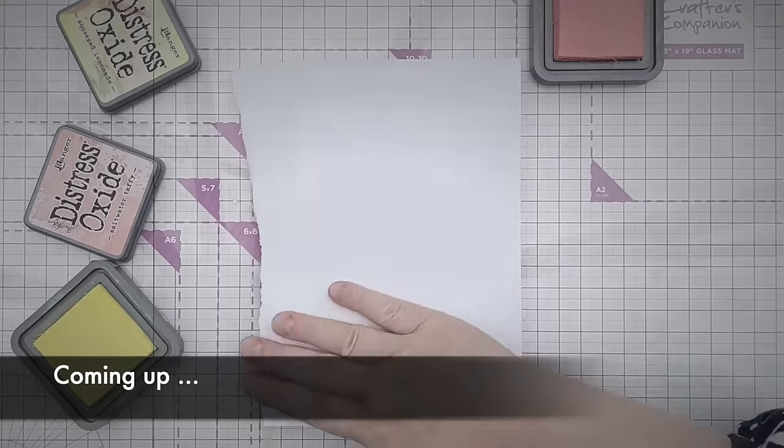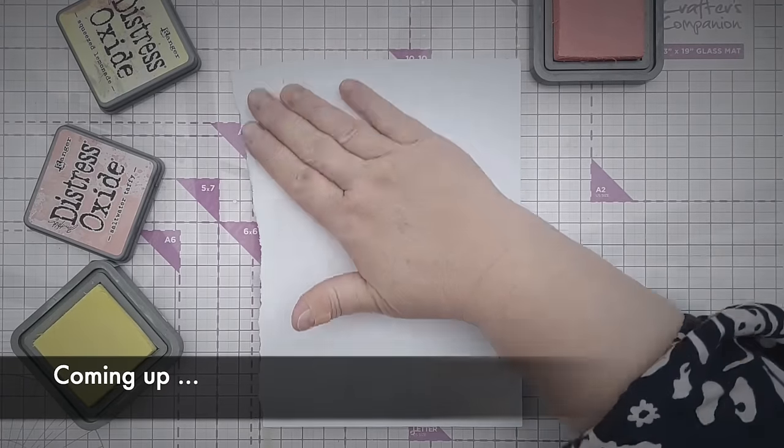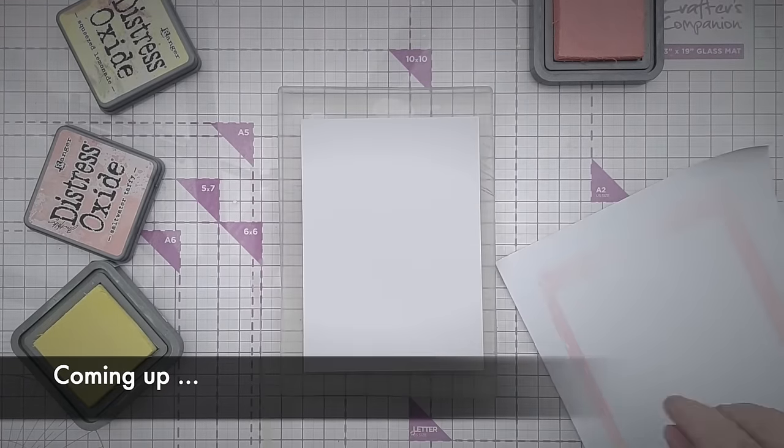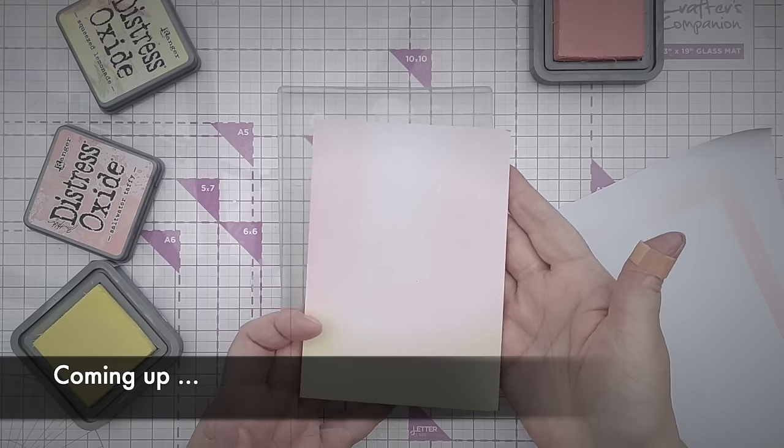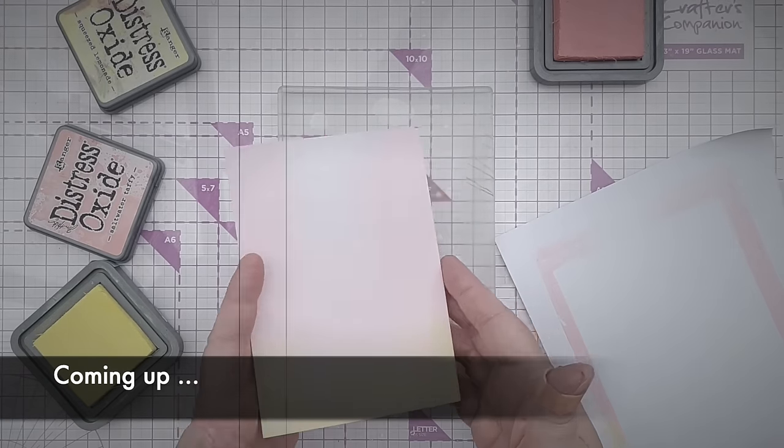Distress oxides are an alternative to acrylics when it comes to gel printing, and one of the big bonuses of using distress oxides on a gel plate is that they're really easy to clean up.